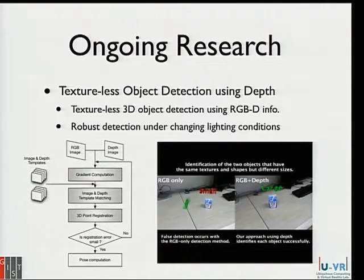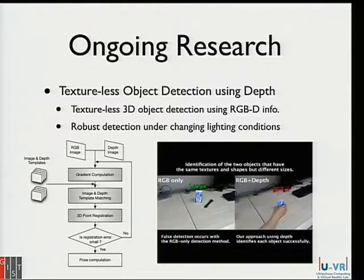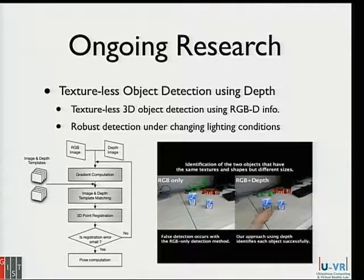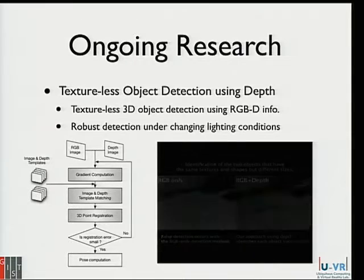The interesting thing is, using depth information we can know the size of the target object. Even though there are two objects which have the same textures but different scales, using depth information we can identify each one from the other. This is an interesting part of using depth information.